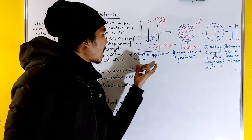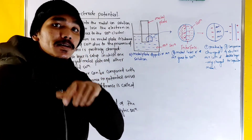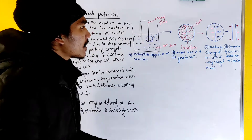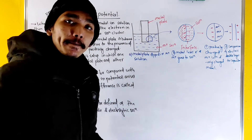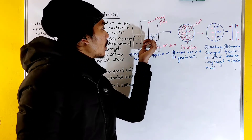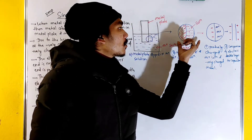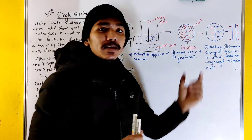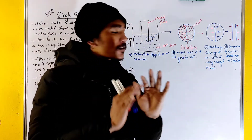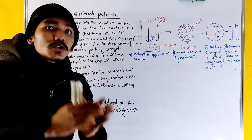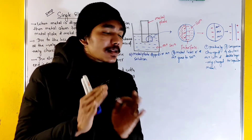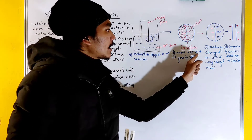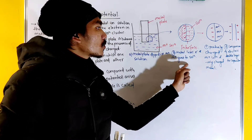For example, consider a metal plate dipped in an M-plus ion solution. M-plus metal solution — this is what we can see with the interface. The second figure shows M-plus solution going into the solution.